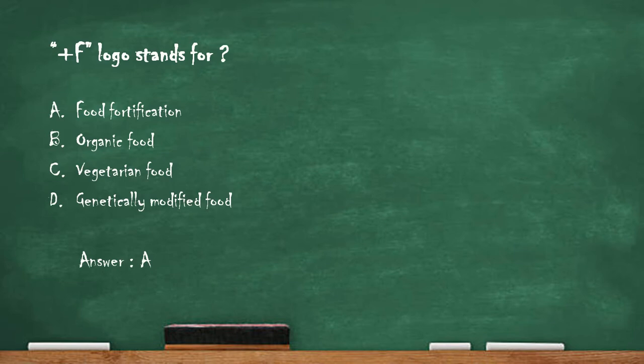Regarding the +F logo design: the square around the +F represents completeness, and the plus sign represents adding extra nutrition through vitamins and minerals to meet daily nutrition requirements. The ring illustrates the ring of good health and protection for an active and healthy life. These are the basic points related to the +F logo, which stands for food fortification.